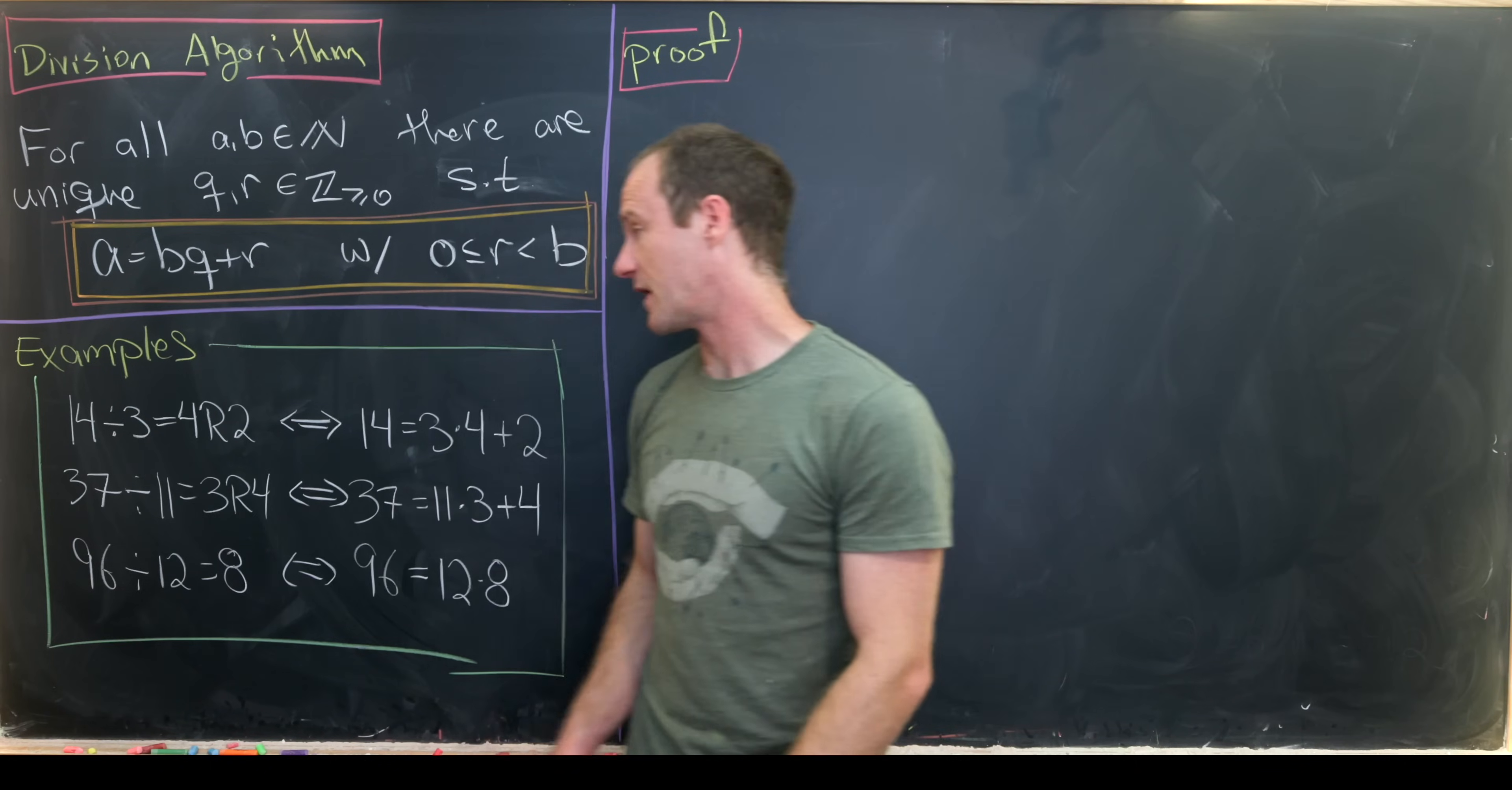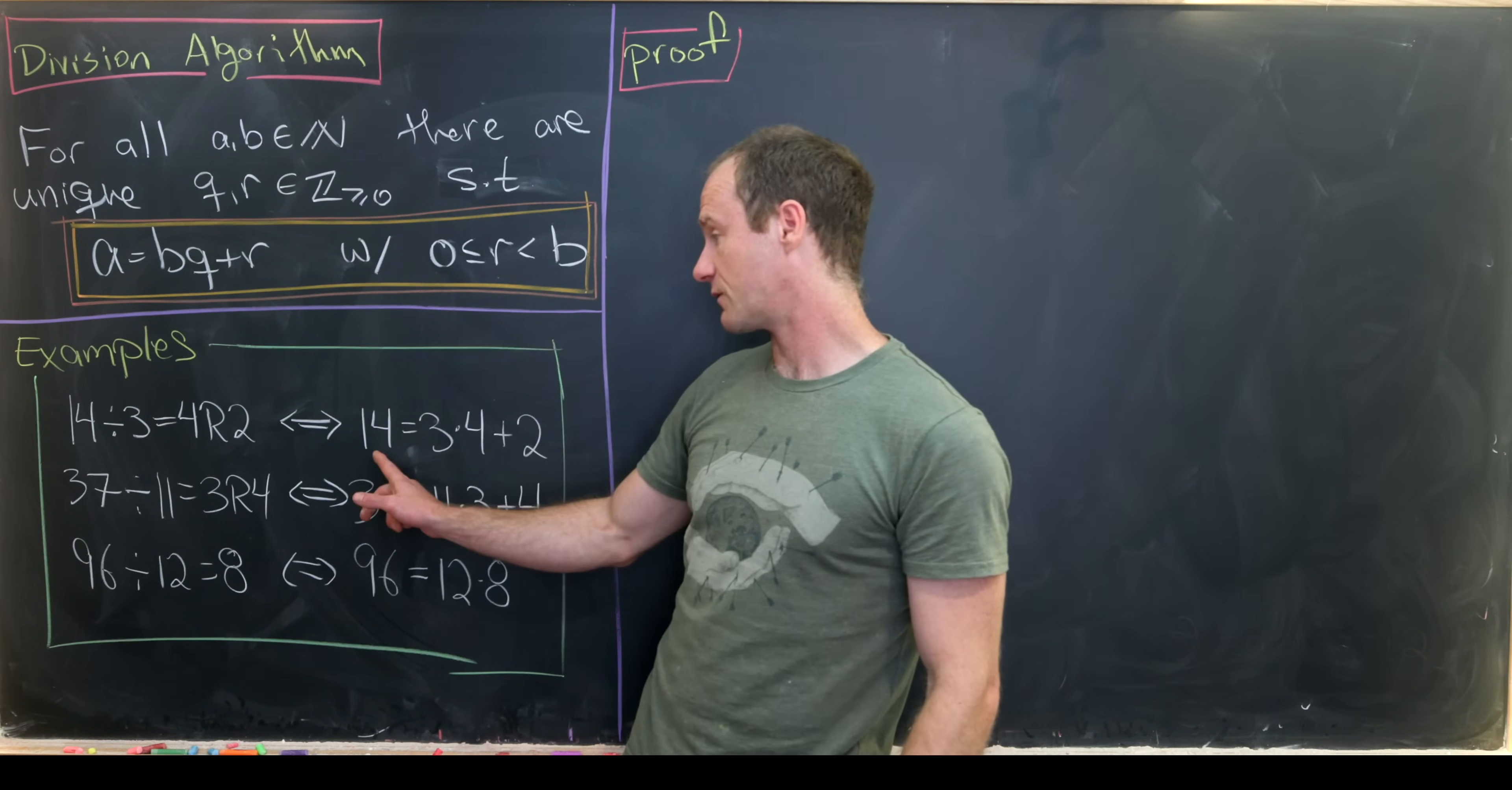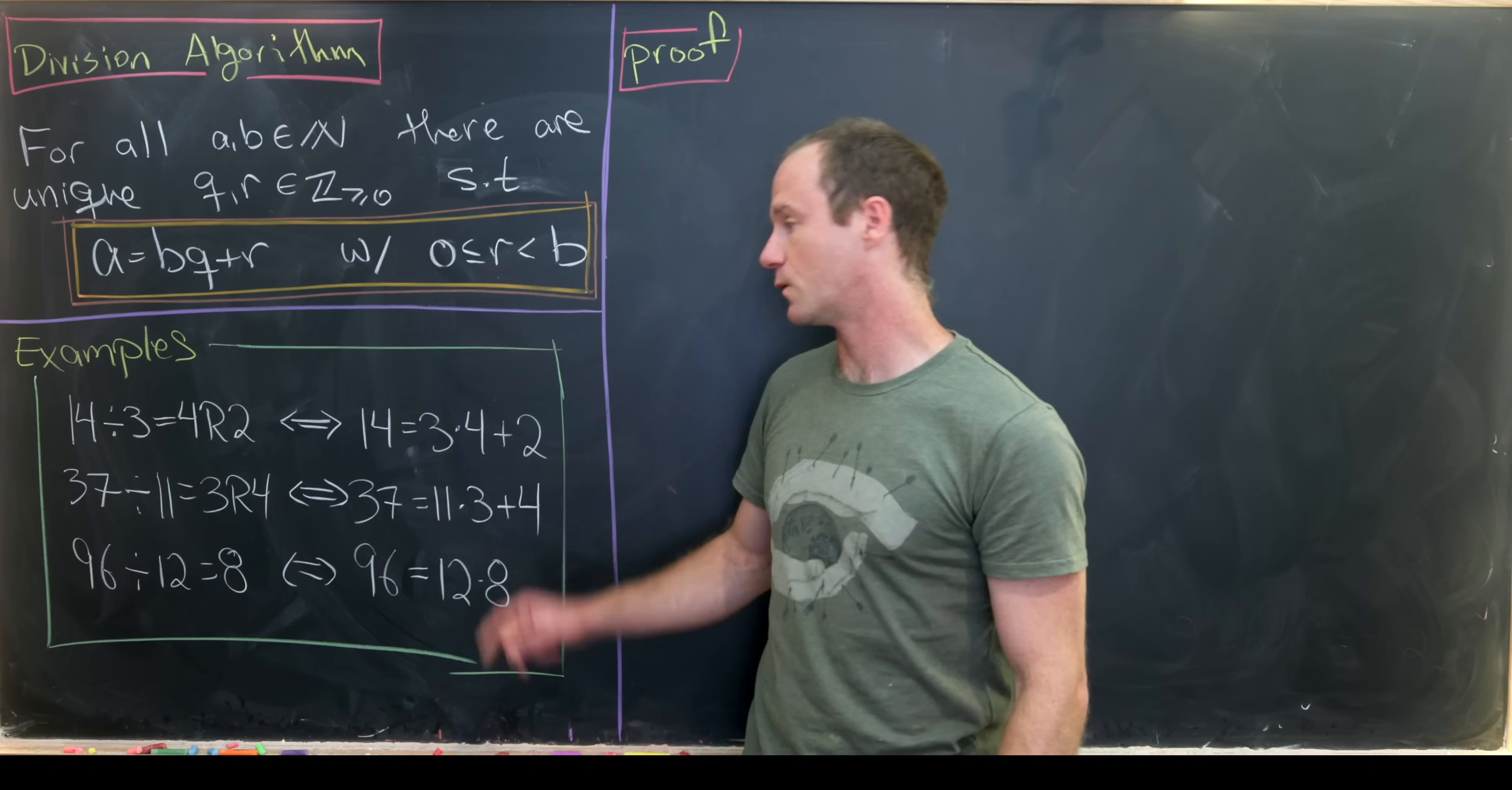So 14 divided by 3 is 4 remainder 2, and that's because we can write 14 as 3 times 4 plus 2.